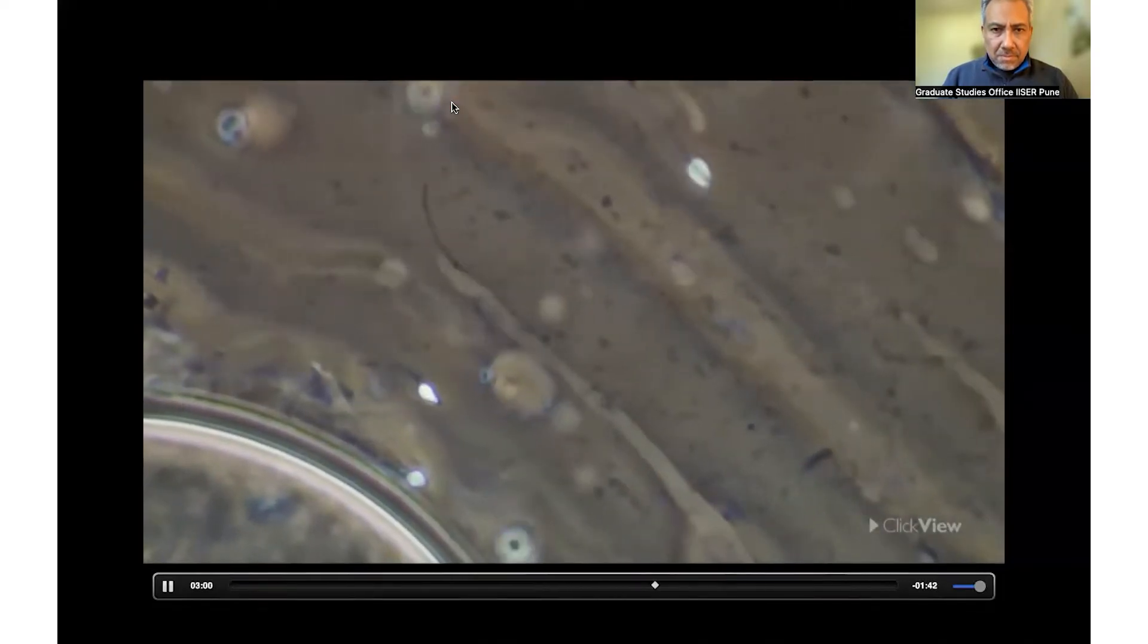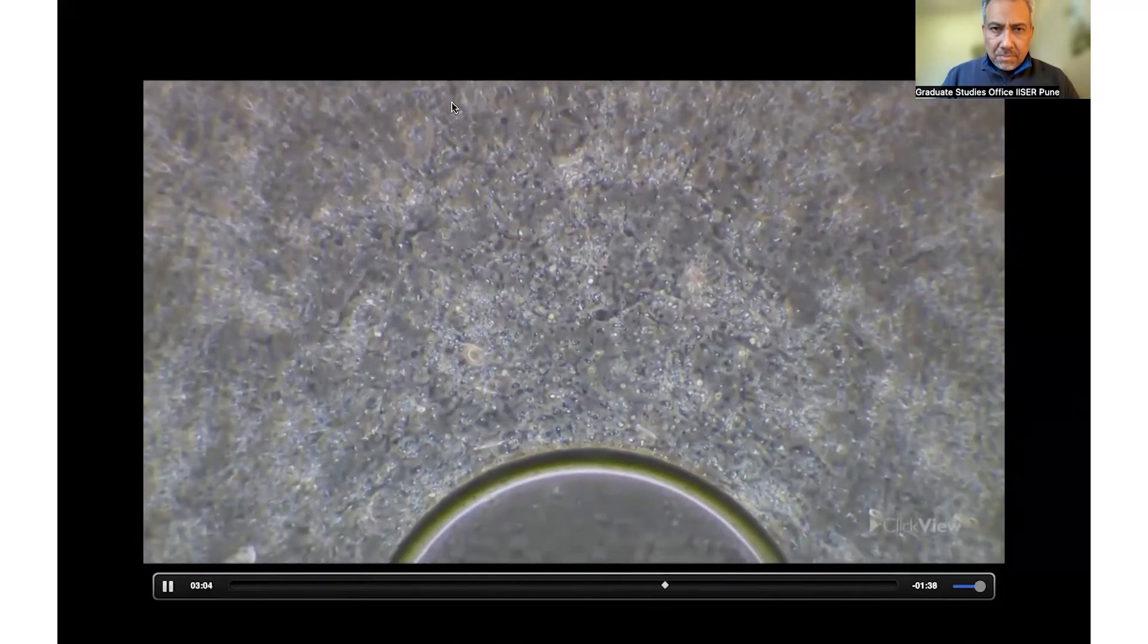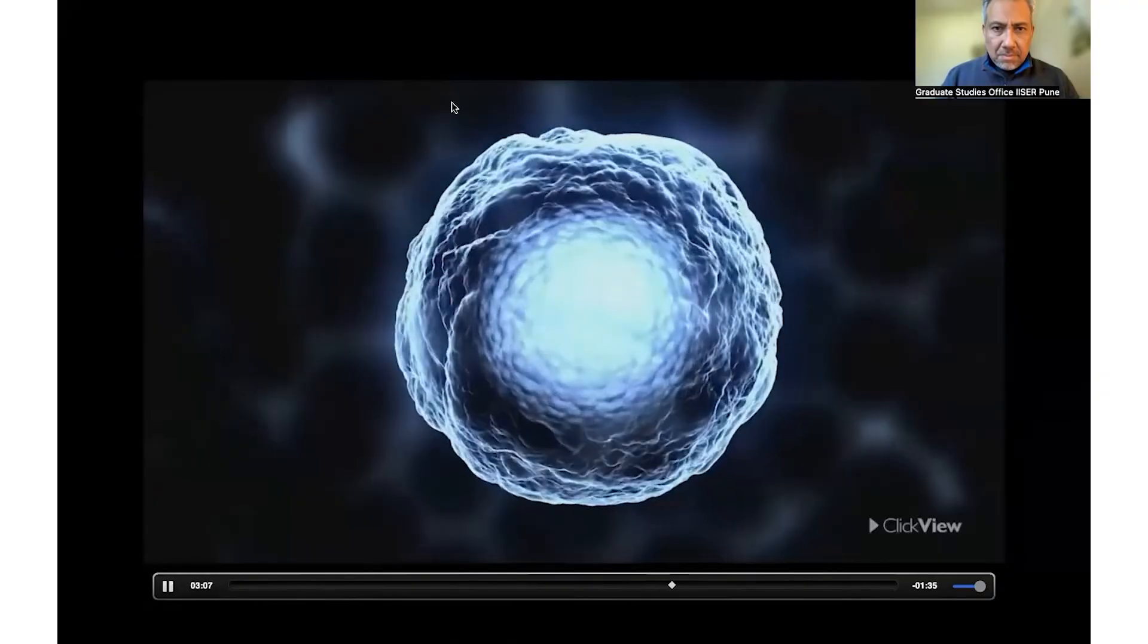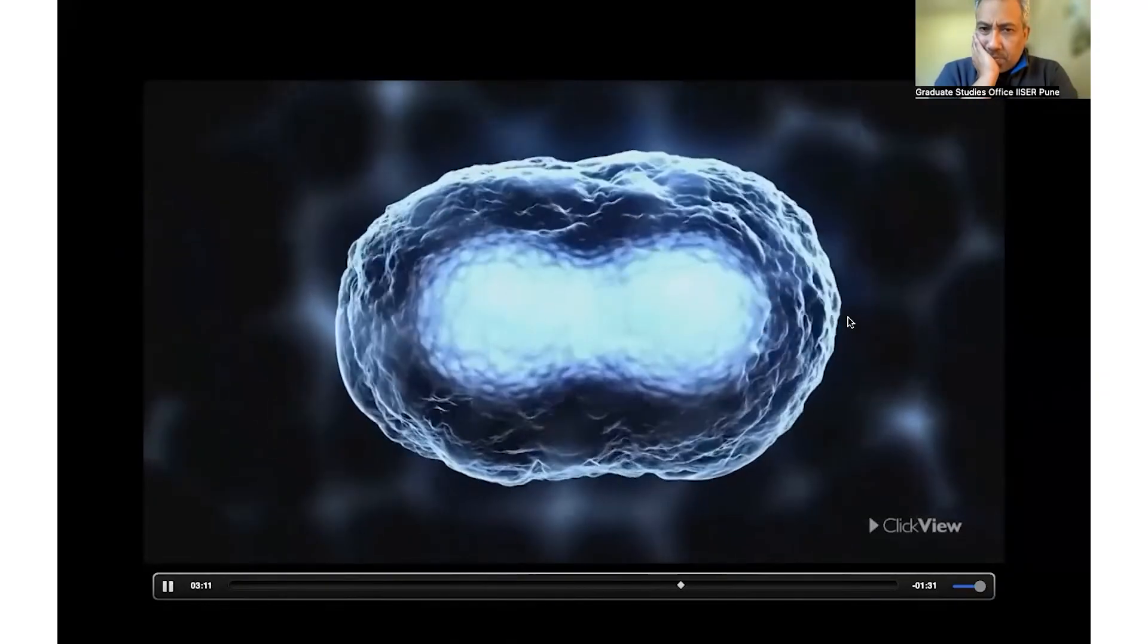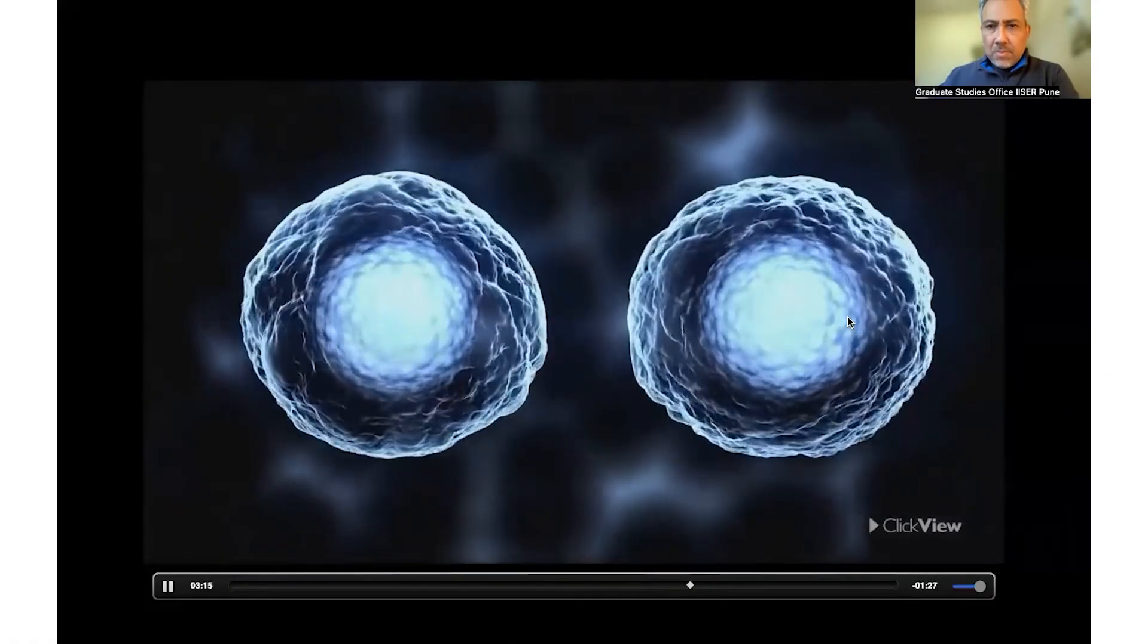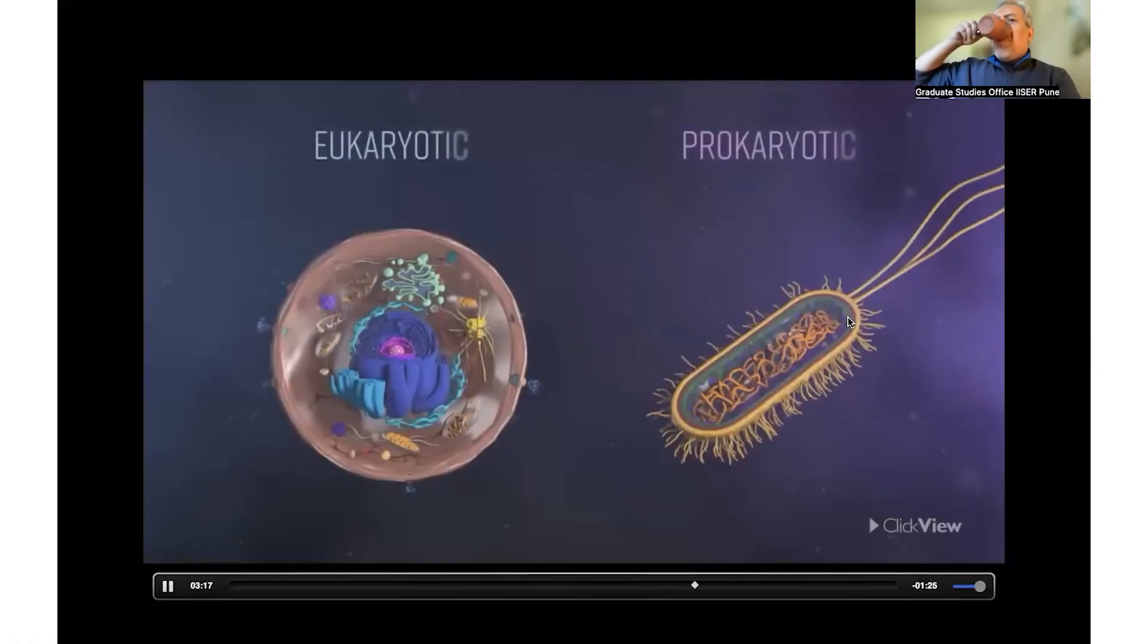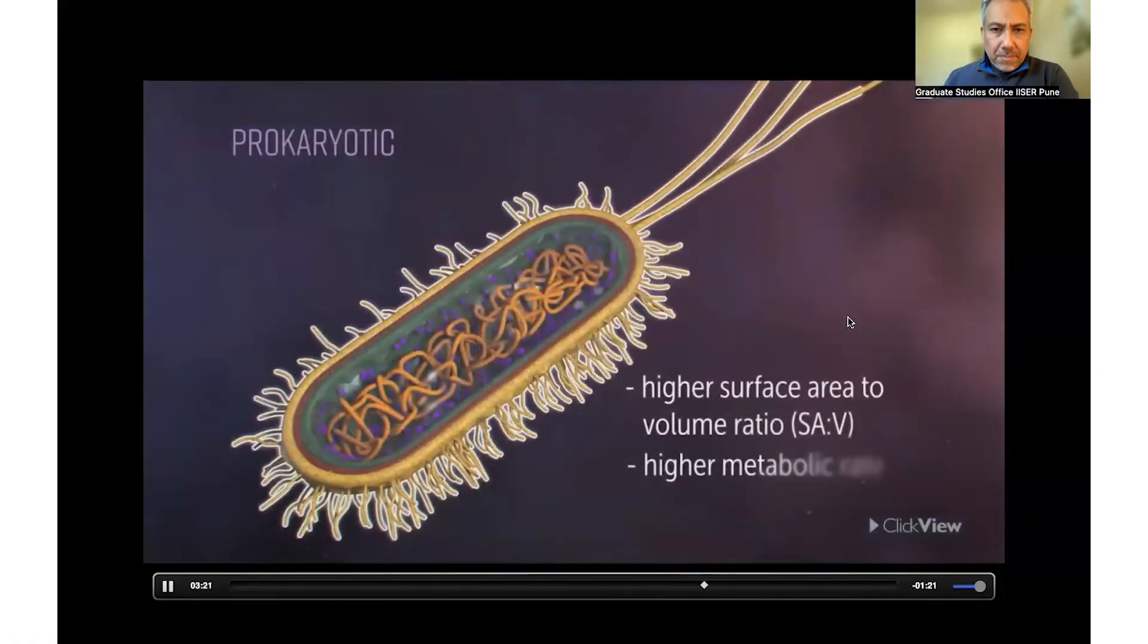Most eukaryotes reproduce sexually. The offspring have genetic material that is a combination of the parent's genome. Prokaryotes, however, reproduce asexually. Their offspring are clones of the parent cell, which come about through binary fission. Finally, prokaryotic cells have a larger surface area to volume ratio than eukaryotic cells, which results in a higher metabolic rate and therefore increased growth rate and shorter generation time.